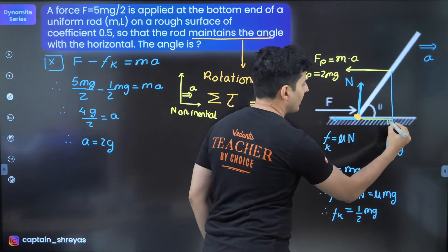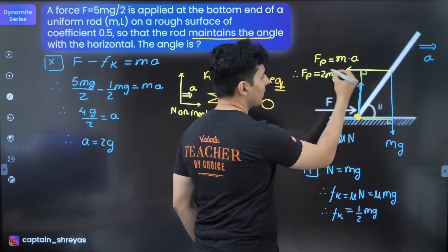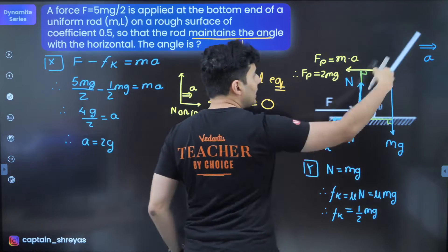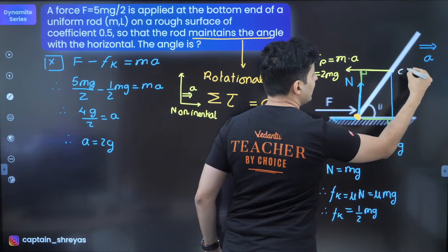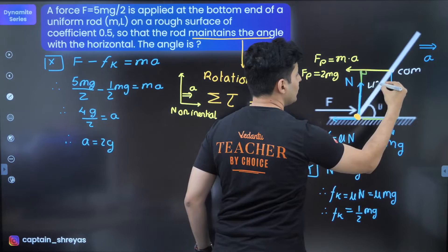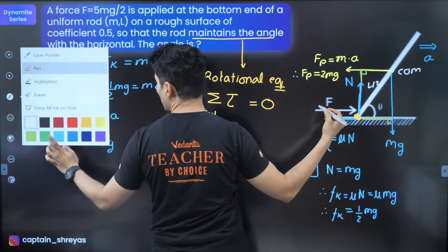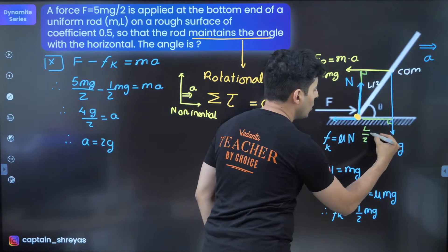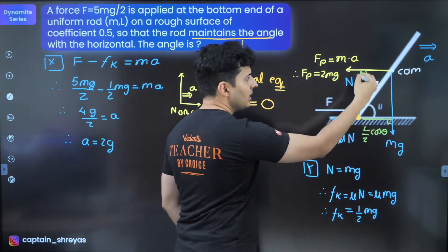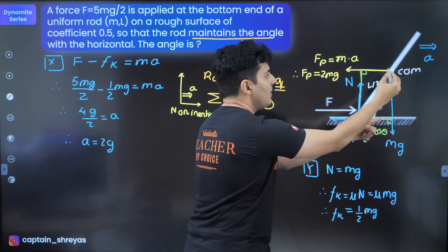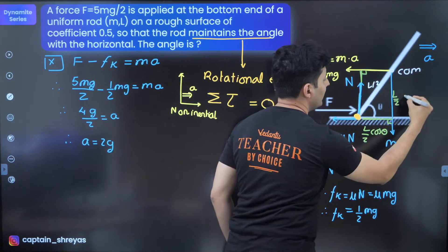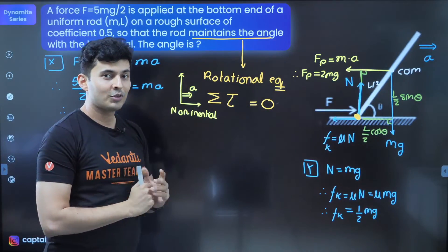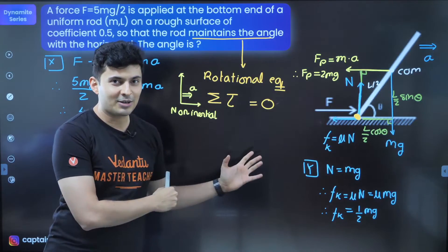The only two forces which will generate torque are Mg and this pseudo force. Because these two forces are at certain distance from this point and I can measure the distance as well. You just have to drop perpendiculars. If you notice, this is the perpendicular for Mg and this is the perpendicular for the pseudo force. This distance of course is L by 2. The total length is L. This is the center of mass. So this will be L by 2. If that is L by 2, obviously, this distance will be L by 2 cos theta and this height will be L by 2 sin theta. I'm going to need it for the torque calculation.